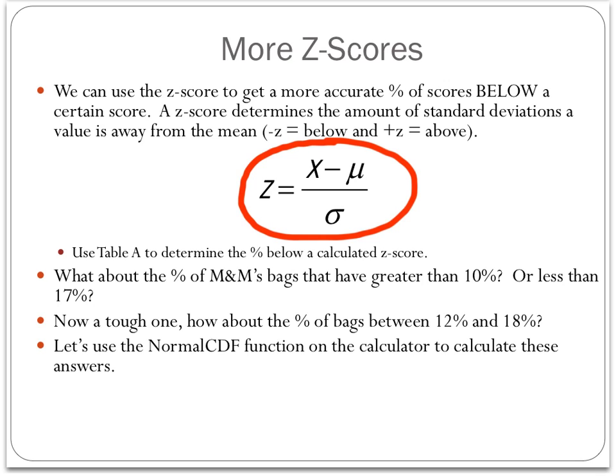So let's go back to the original question. What percentage of M&Ms have greater than 10% or less than 17%? And what about the ones between 12% and 18%? So we can draw the bell curve just like we did with the Tiger Woods problem and shade in the region that we're looking for. Or there is what's called the normal CDF function, which will do the same thing without having to use the table. And I'd highly recommend getting very acclimated with this function so that you can do this without having to use the table. You still have to draw the bell curve, but at least it doesn't require you to interpret percentages from the table.